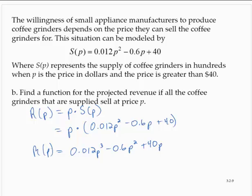So R is the revenue from selling the coffee grinders at p dollars.